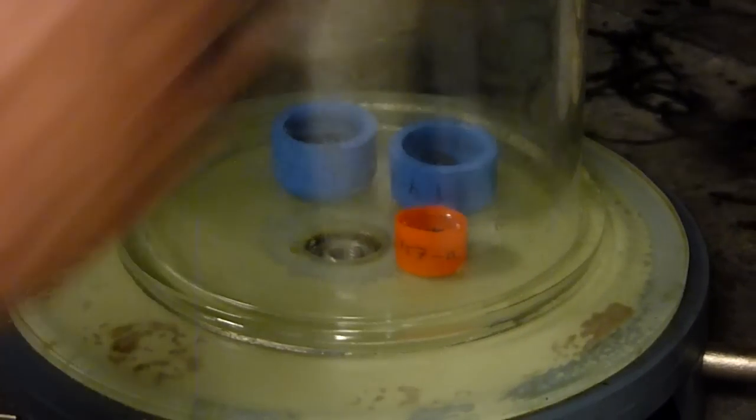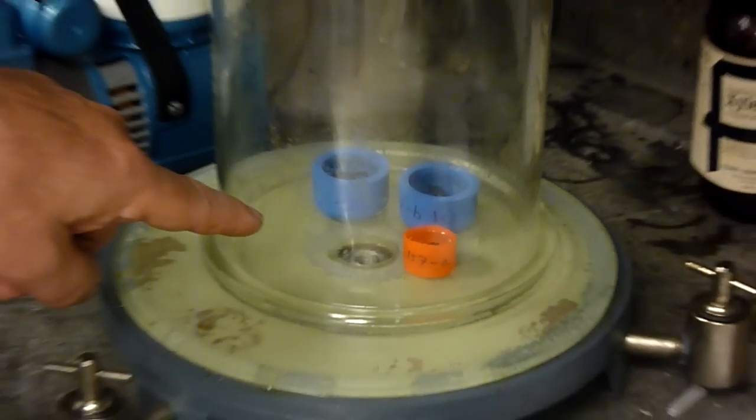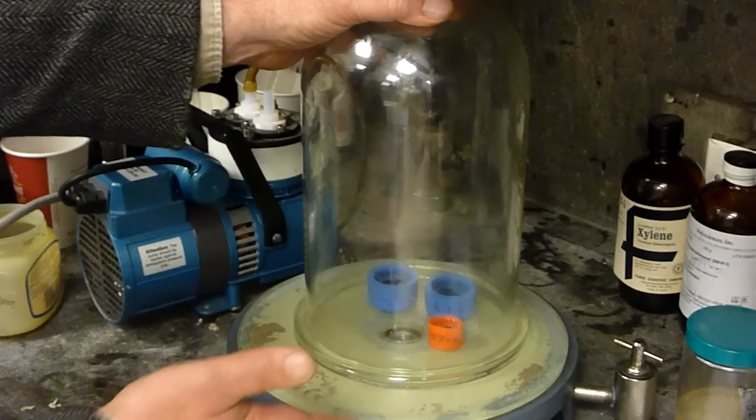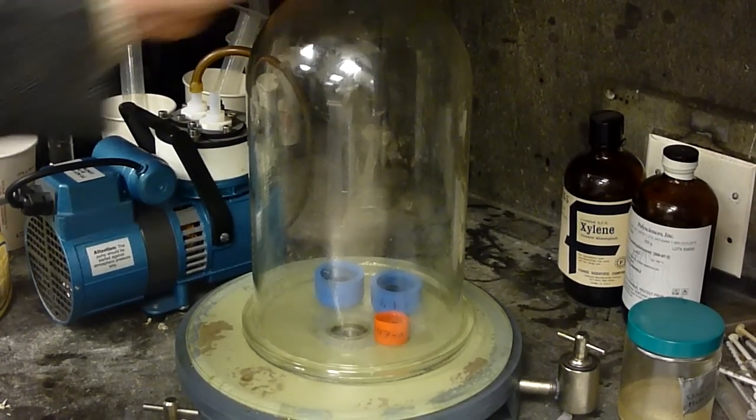The bell jar now will be placed over them. And the air will escape or be sucked out through the hole in the center of this table here. And I think we have a pretty good seal, it looks like.